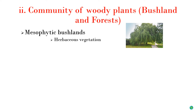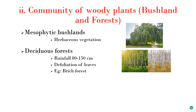In many places xerophytic and mesophytic bushlands merge with each other. Next is deciduous forest: these are distributed in temperate, cold, or tropical regions where annual rainfall is 80 to 150 centimeters. Defoliation of leaves happens for every five to eight months. Mosses and lichens grow on the surface of these trees.